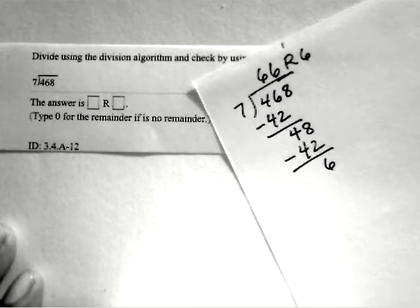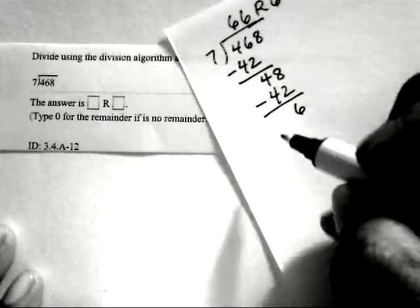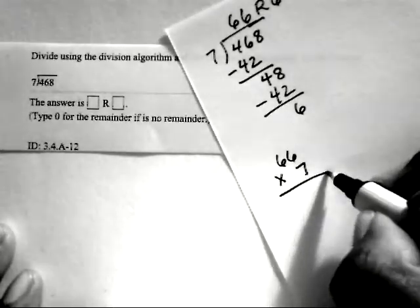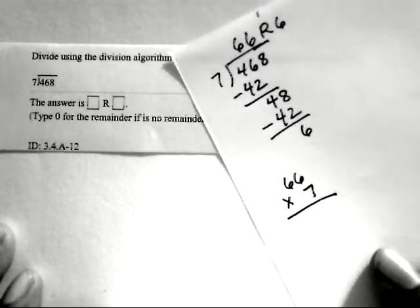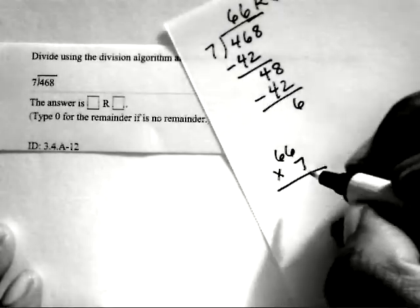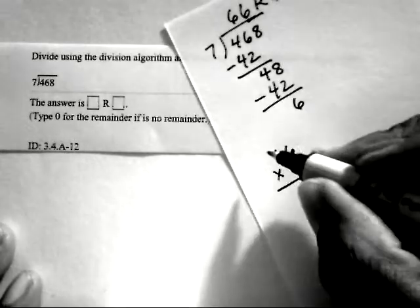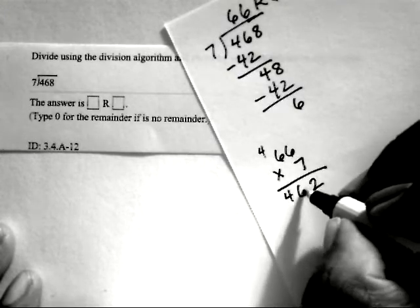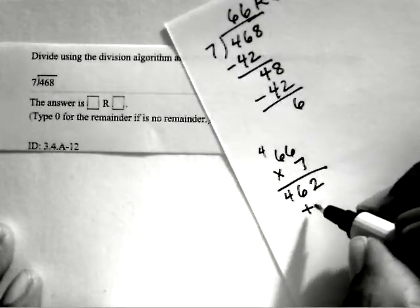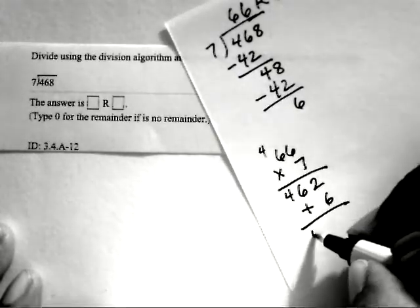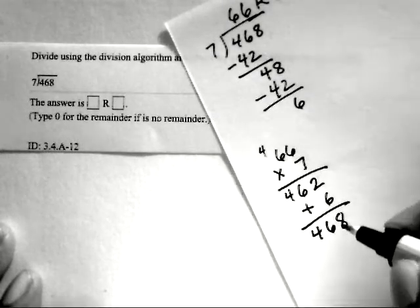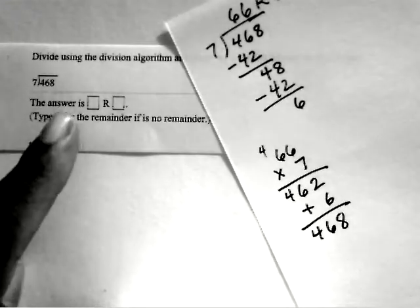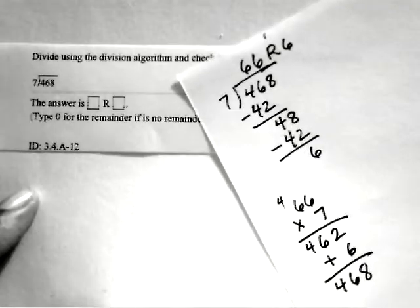Now to do the check, what you're going to do here is take your quotient, which is 66, multiply it by the divisor, which is 7, and then you're going to add the remainder of 6. So if you do 66 times 7, this will be 42, carry the 4, 42, 462. Add your remainder of 6, you should get the dividend of 468. So the correct answer there will be 66, the remainder of 6.